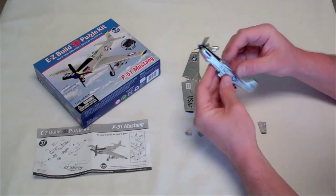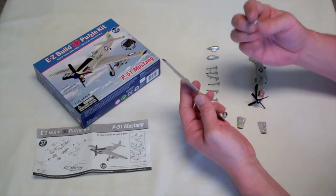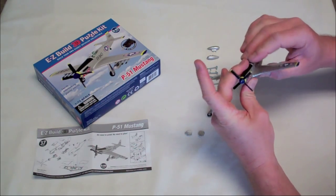The P51B and C models, which arrived in 1943, incorporated an advanced Merlin engine. The P51D, arriving in 1944, had an even greater range and speed, as well as improved armament.